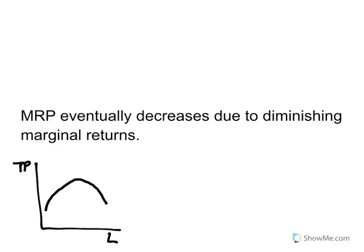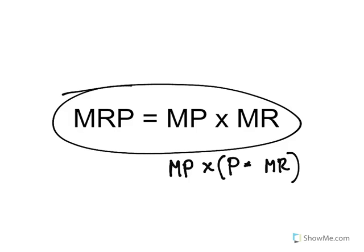And so remember that marginal revenue product is equal to marginal product times marginal revenue. And so because marginal product eventually decreases, marginal revenue product will eventually decrease. So you can see how that plays out.